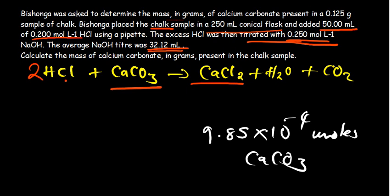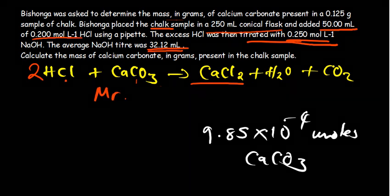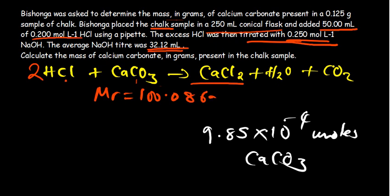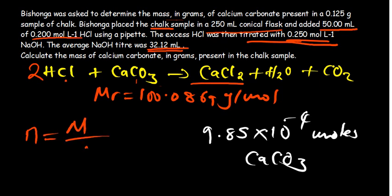Now the question is: how do you find the mass? Notice that we have been given the formula of calcium carbonate, so we are about to find its molar mass. Calcium has a molar mass of 40, carbon is 12.01, and oxygen is 16. The molar mass of calcium carbonate is approximately 100.0869 grams per mole.